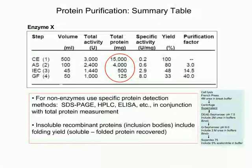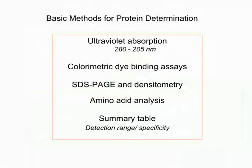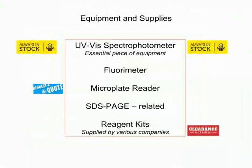Often we are dealing with insoluble recombinant proteins and have to include refolding steps, so we need to know the recovery of folded, normally soluble protein. Here are some of the methods I will discuss briefly. At the end I will summarize them with a table giving detection range, and then I will talk about immunological methods and mention proteomic-based methods. A UV spectrophotometer is an essential piece of equipment in a biochemistry lab.